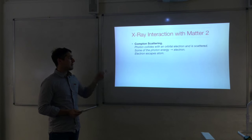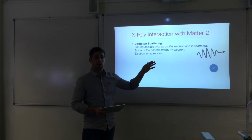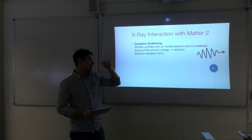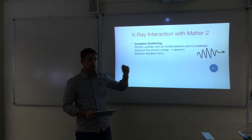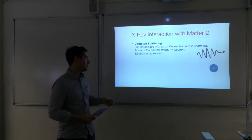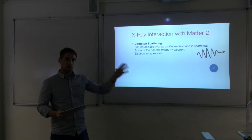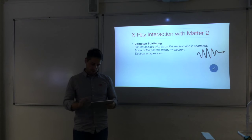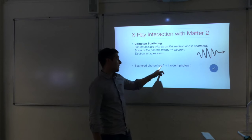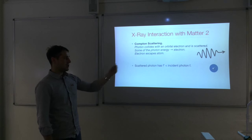The second method is Compton scattering. The incoming photon collides with an orbital electron in an atom and is scattered. Some of the photon energy is given to the electron, sufficient for it to escape the atom, but not all of the photon energy was required to do that. So some photon energy is left over, and we get a scattered photon with a frequency lower than the incident photon's frequency — a change in frequency of the photon.